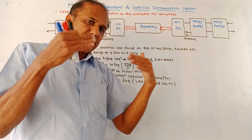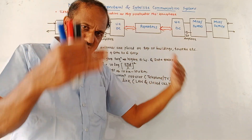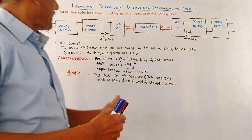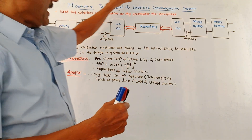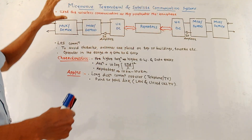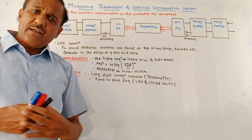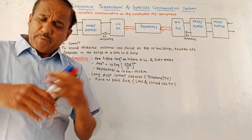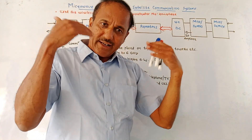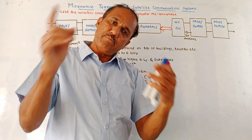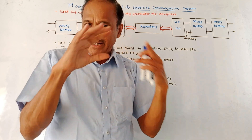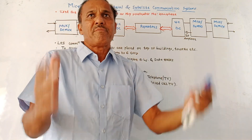We will study some important characteristics of these systems and we will compare terrestrial and satellite communication system. Basically, as far as communication is concerned, microwaves are used for wireless communication because microwave signals can penetrate through the ionosphere.